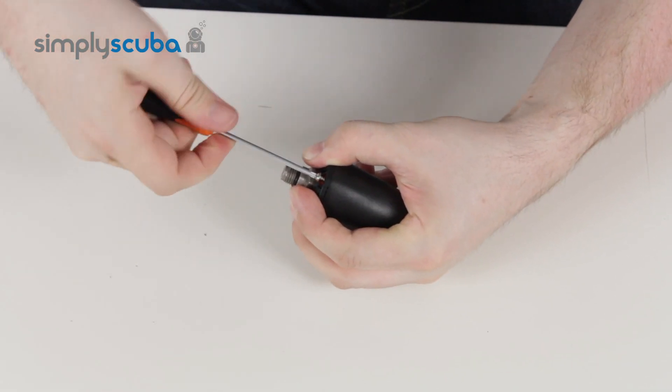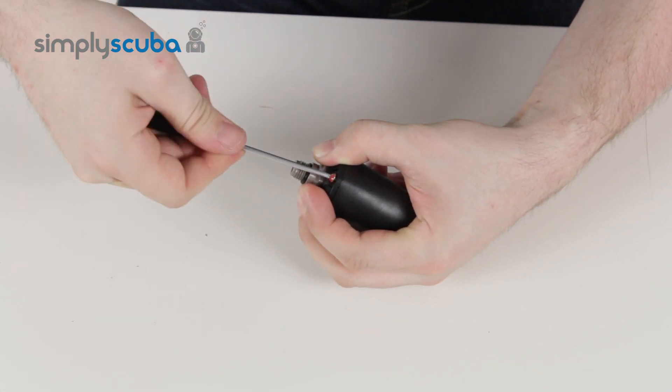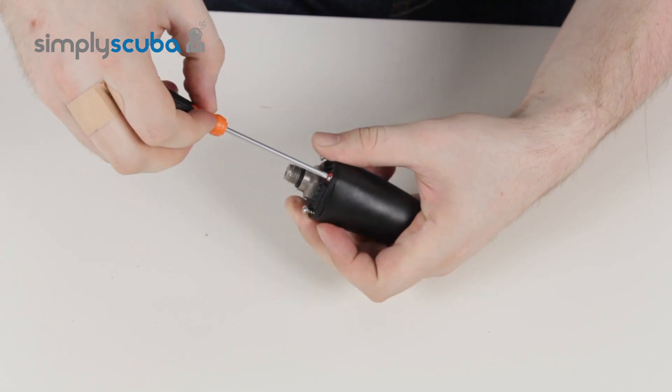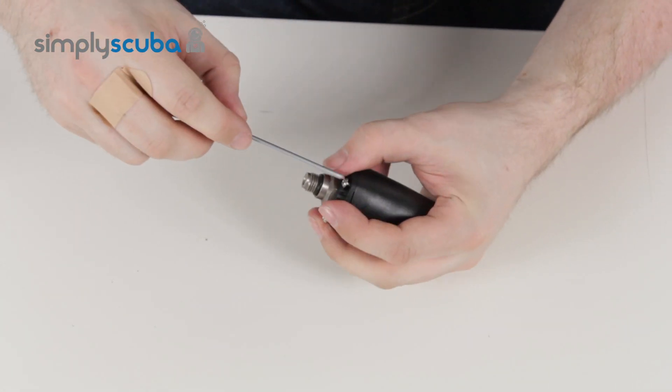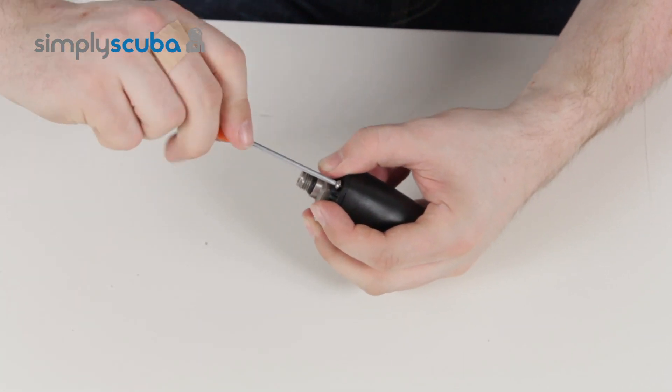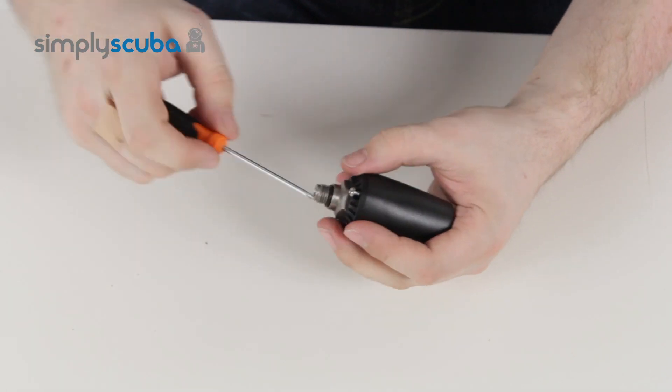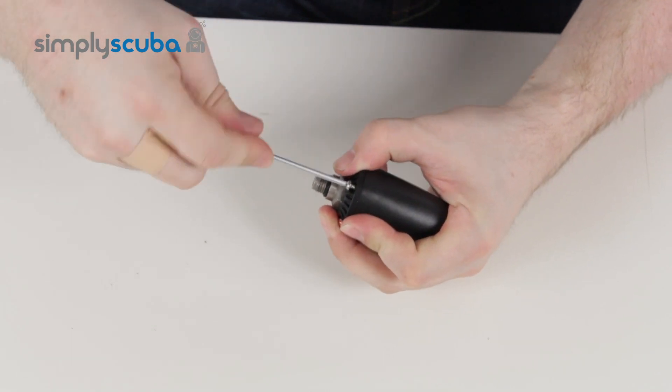All you want to do is just do them up finger tight. You don't want to screw it in too far or too strong. Just finger tight is nice enough. Go to the opposite side, tighten that screw up, and start to do the others up.